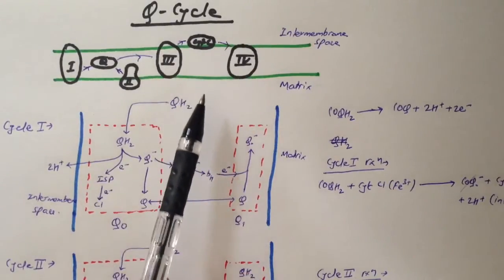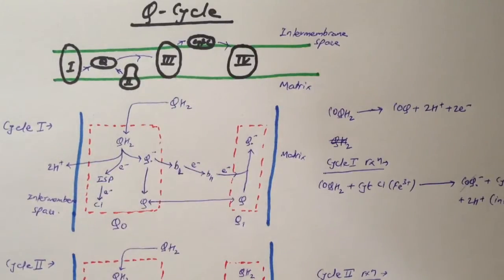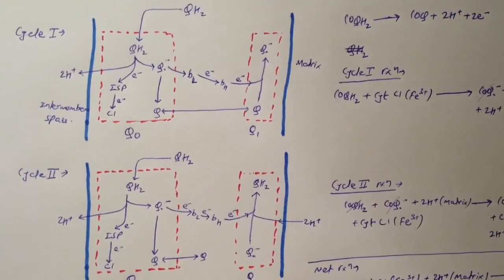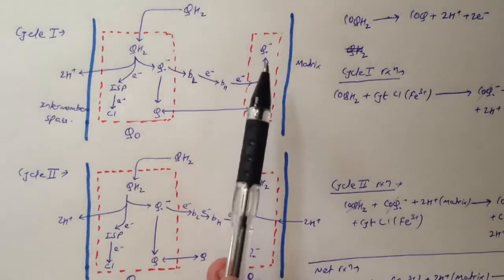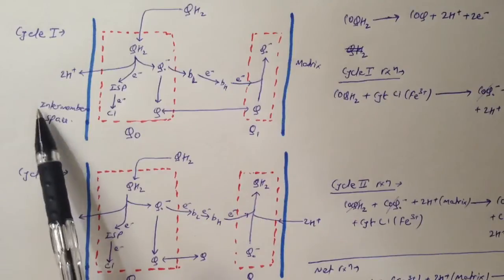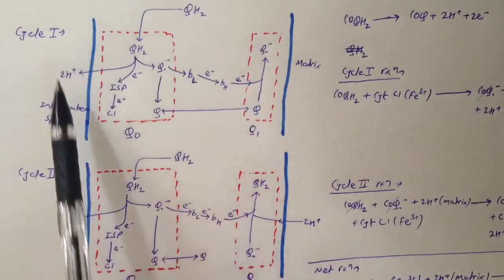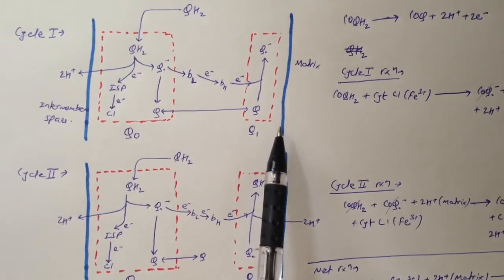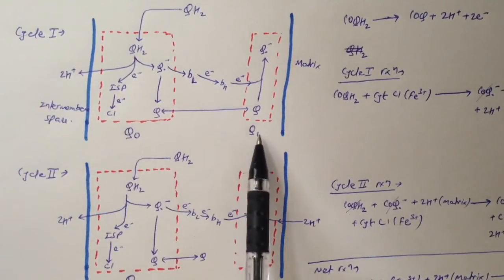Q cycle happens in complex 3. Q cycle consists of two cycles of reactions called cycle I and cycle II. This is our inner mitochondrial membrane — this is the mitochondrial matrix side and this is the intermembrane space side — and this whole thing represents complex 3. Complex 3 consists of two catalytic centers: one is called Q0 and the next one is called Qi.